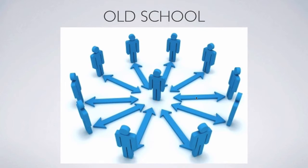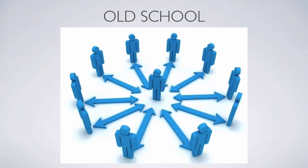Let's look at old school SEO. People got a website and went out and got links to that website, even PBN links, with all links pointing to the website. The question begged by the Panda algorithm is: is this what naturally occurs when something becomes popular and starts to be mentioned between people on websites? Of course, the answer is no.